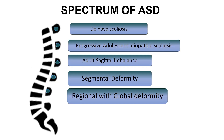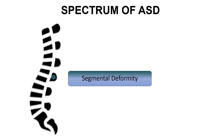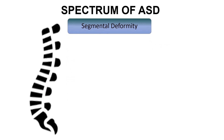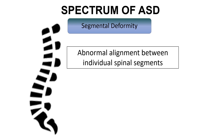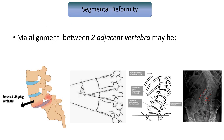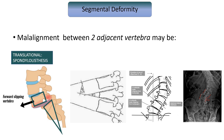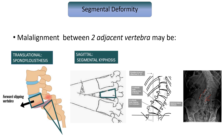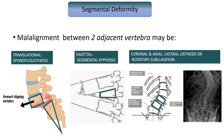Malalignment of the spine may occur between two adjacent vertebrae. Segmental deformity is defined as an abnormal alignment between individual spinal segments. In this deformity, malalignment between two adjacent vertebrae may be translational such as in the case of spondylolisthesis, sagittal and segmental kyphosis, or coronal and axial as in the case of lateral listhesis or rotatory subluxation.